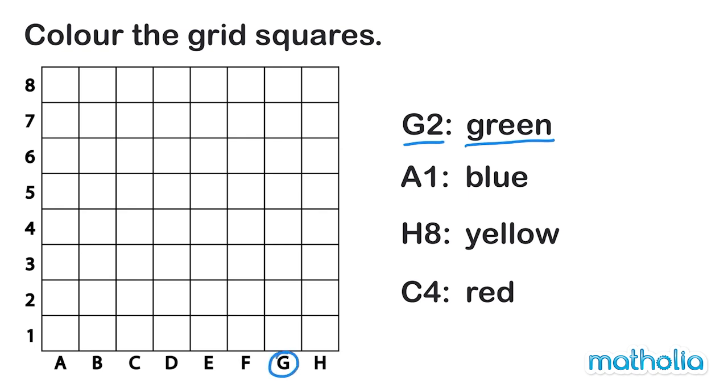First I find column G, then row 2, and color it green.